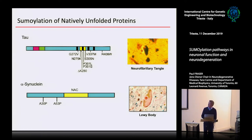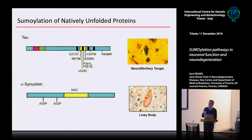Tau is a member of the natively unfolded group of proteins. It has four microtubule binding repeats and a number of mutations associated with frontotemporal dementia. In solution, this protein is largely unfolded with no real native structure. Similarly, synuclein has a couple of mutations associated with familial Parkinson's disease. Tau forms neurofibrillary tangles in neurons, and synuclein assembles into Lewy bodies.